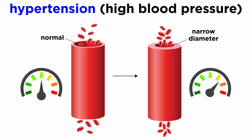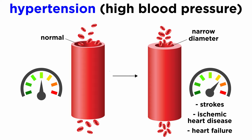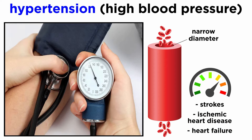These drugs are primarily used in the treatment of high blood pressure. Acutely high blood pressure doesn't usually cause serious health complications, but chronic uncontrolled high blood pressure is a major risk factor for strokes, ischemic heart disease, and heart failure. These adverse clinical outcomes underline the importance of pharmacological agents that can manage high blood pressure.